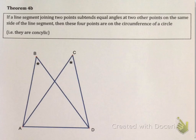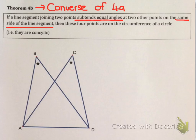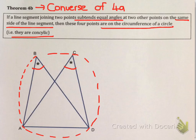Let's have a look at Theorem 4b. Theorem 4b is the exact converse of Theorem 4a—it says the exact opposite. What it says is if you have a line segment that does subtend equal angles, so it's given you the angles that are equal, then if you know these angles are on the same side of the line segment, these four points must be on the circumference of a circle. A word for this is we say that these four points are concyclic.